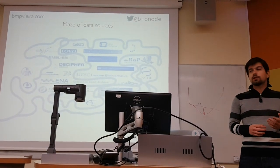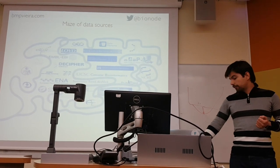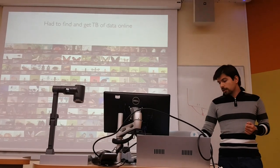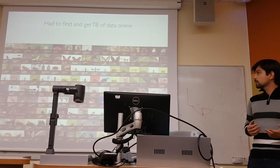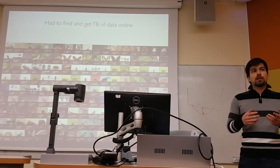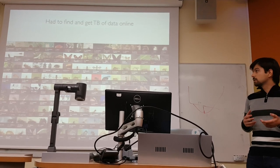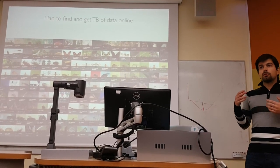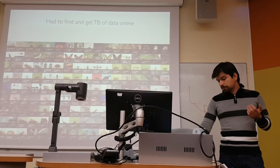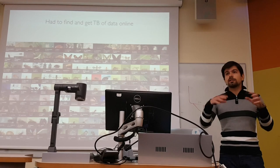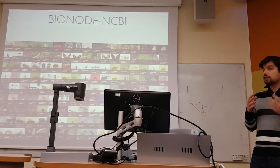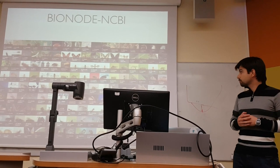After looking at the sources of data that were available, I found I could use the NCBI database to get most of the data I needed. But to decide if I could include a species in my analysis, I had to fetch all the information available on that database regarding that species — the samples, the projects, the papers — to know if the data was compatible with my approach. This required doing thousands of interconnected queries to the database. So I wrote a tool called BioNode NCBI that allows doing these kinds of queries.